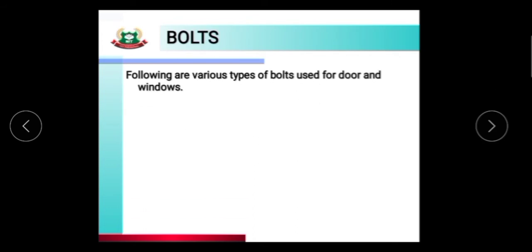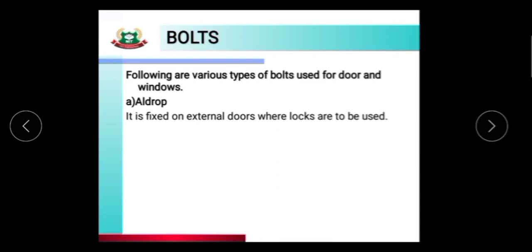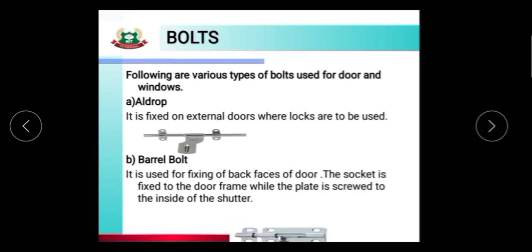Now next we will discuss about bolts. Various types of bolts are used for doors and windows. The bolt is fixed on the external door and used on the back face of the door. The socket is fixed to the door frame while the plate is screwed to the inside of the shutter.